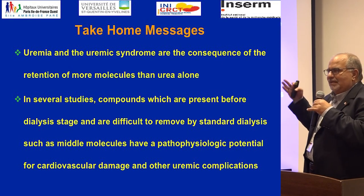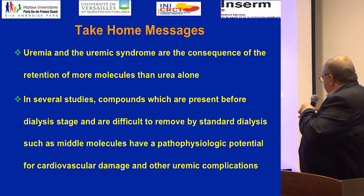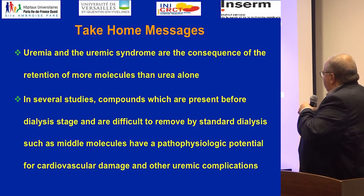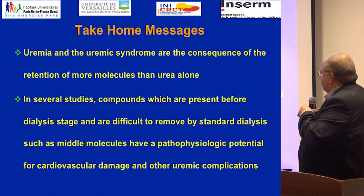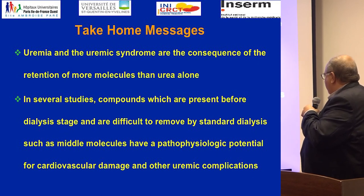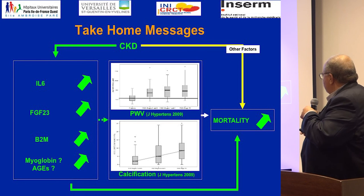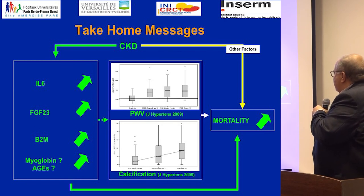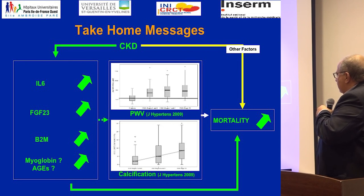I don't have time to speak about other middle molecules, but it's open if you want to ask a question. Take-home message: uremia and uremic syndrome are, in part, related to retention of several molecules, not only urea. Some of these molecules are difficult to clear by what we use — even hemodialysis or hemodiafiltration — but these molecules play a role in cardiovascular complications and other uremic complications. To summarize our work: IL-6, beta-2, and FGF-23 are associated with pulse wave velocity, calcification, and mortality, independent of other factors. Myoglobulin and AGEs seem to play some role at least in cardiovascular complications.